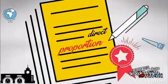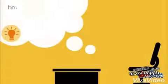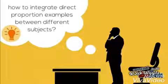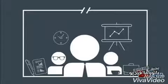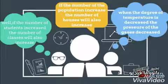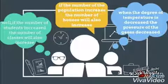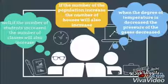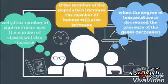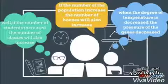Direct Proportion. But how to integrate direct proportion examples between different subjects? If the number of students increased, the number of classes will also increase. If the number of population increased, the number of classes will also increase. When the degree of temperature is decreased, the pressure of the gas decreased.